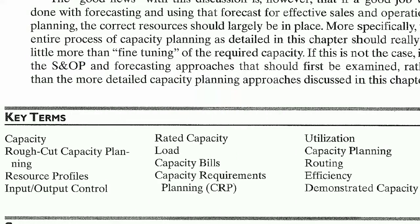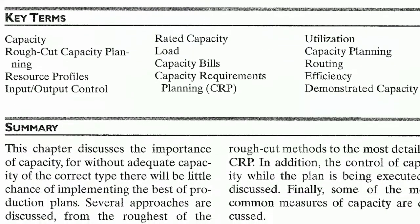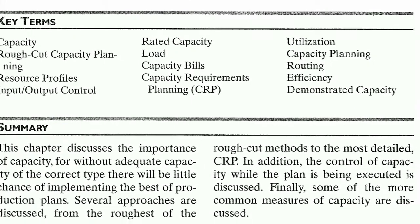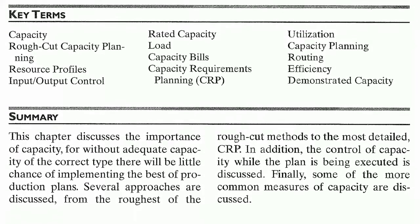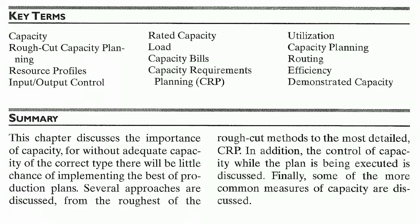Here are some key terms of this chapter: capacity, rough-cut capacity planning, resource profiles, input/output control, related capacity load, capacity bills, capacity requirements planning (CRP), utilization, capacity planning routing, efficiency, and demonstrated capacity. In summary, this chapter discusses the importance of capacity, for without adequate capacity of the correct type, there will be little chance of implementing the best production plans. Several approaches are discussed, from the roughest of the rough-cut methods to the most detailed CRP, in addition to the control of capacity.